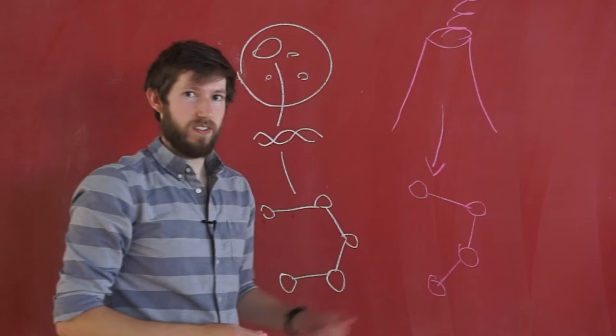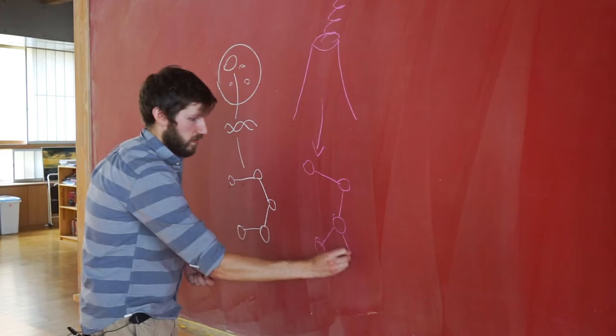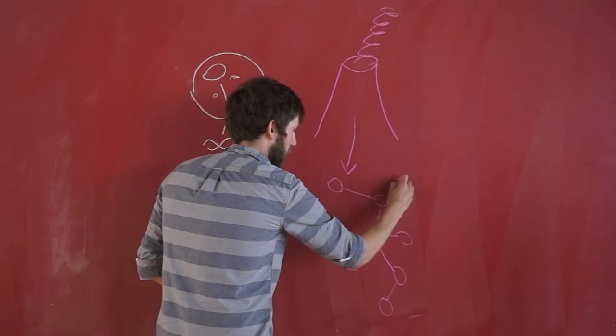Again, the dots are chemical compounds, and the lines are reactions. Once you sample enough, you can draw a really big network and start to compare the patterns between biological and non-biological systems.